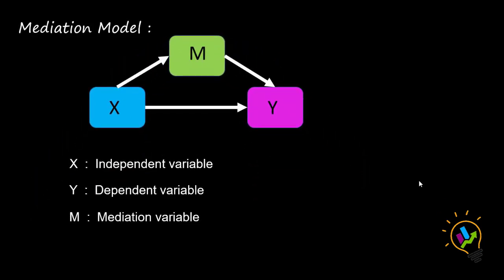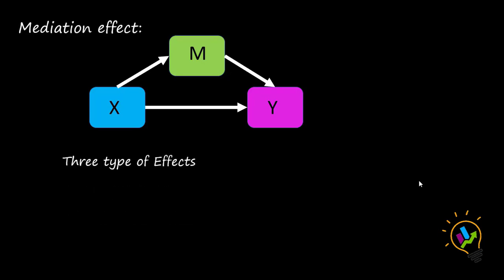Now let us represent with X, Y, and M for convenience. X is the independent variable, Y is the dependent variable, and M is the mediation variable. When we want to research the mediation effect, three important effects must be observed. The first effect is the direct effect — how much effect the independent variable is having on the dependent variable.